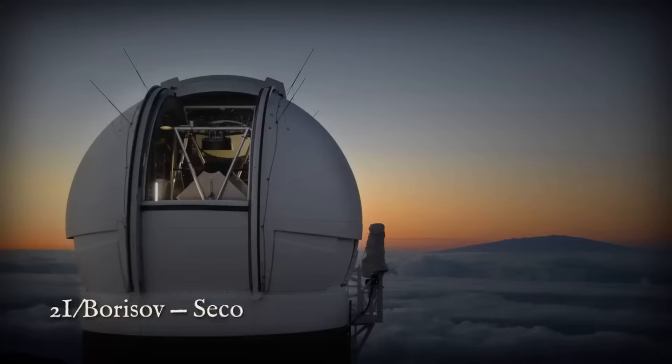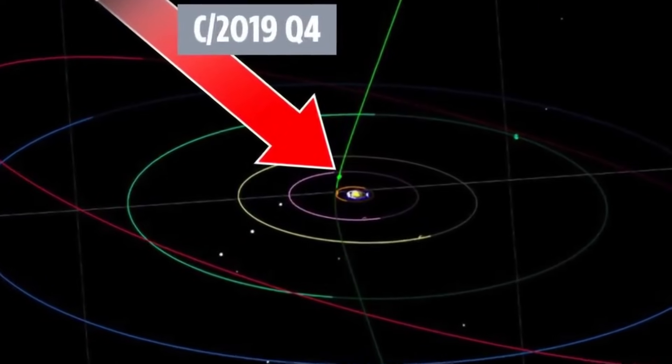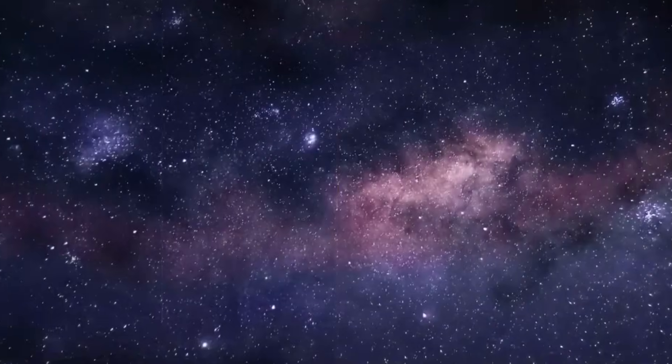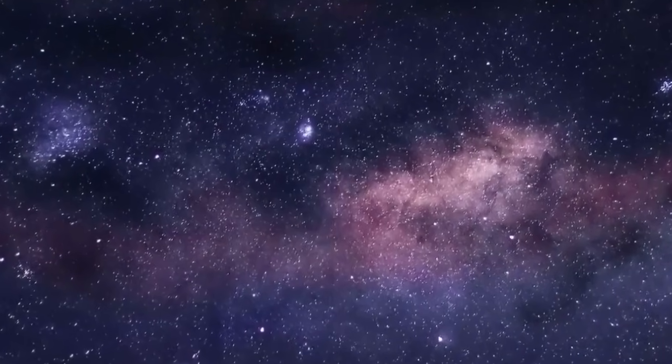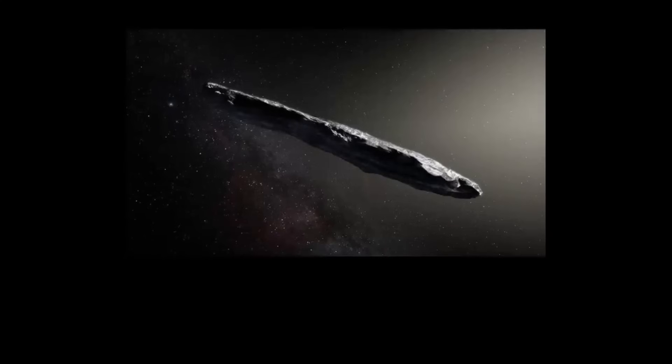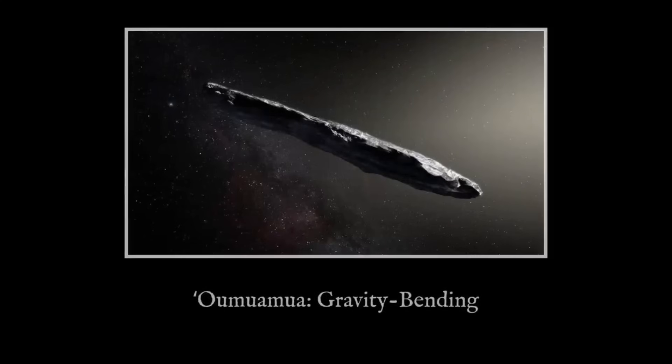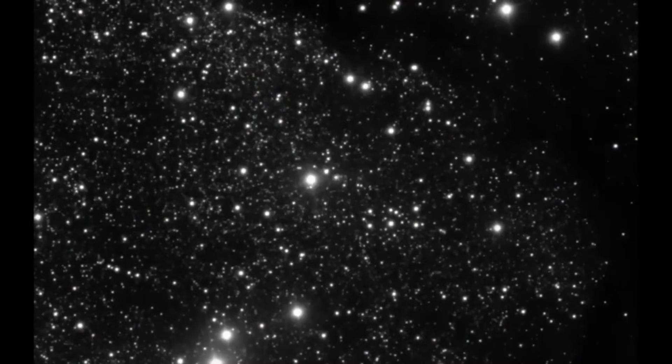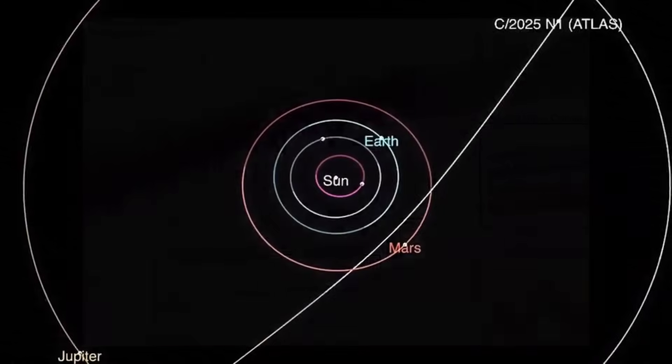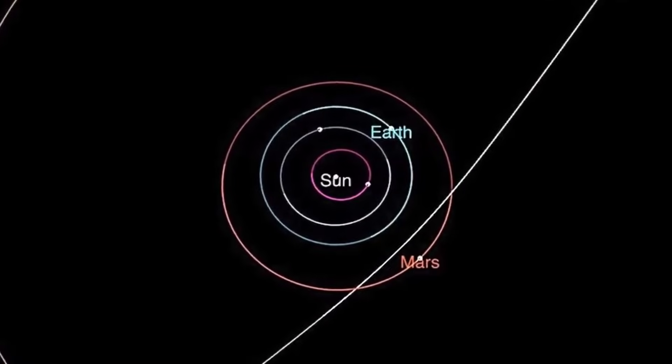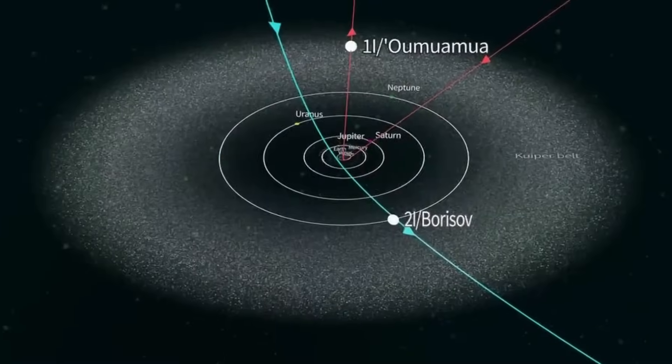Every few days, when astronomers looked for the comet where their calculations said it should be, they found it somewhere slightly different. The differences were small, but they were real and consistent. Something was nudging this comet off its predicted course. The obvious explanation would be those jets of gas shooting off the surface, the same thing that might have pushed Oumuamua. When gas escapes from a comet, it acts like a rocket engine, giving the comet a little push. Scientists calculated how much push the carbon dioxide jets from 3I/Atlas could provide. Even with 30 times more carbon dioxide than normal, the math didn't add up. The jets weren't powerful enough to explain the comet's strange behavior.